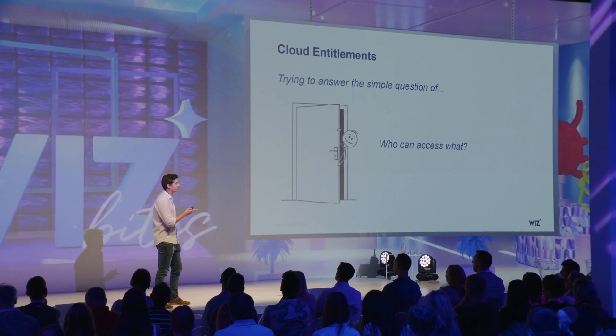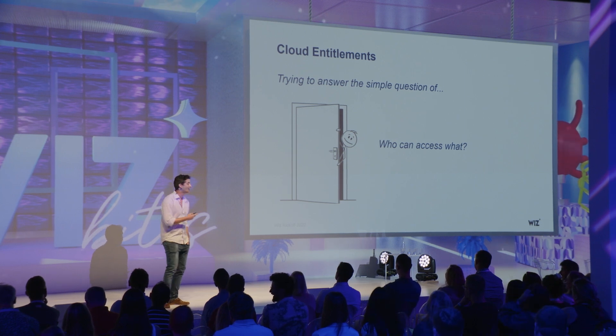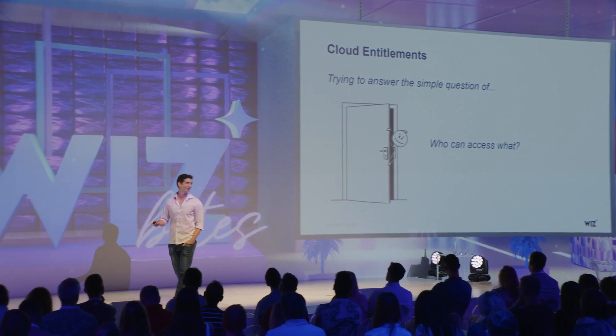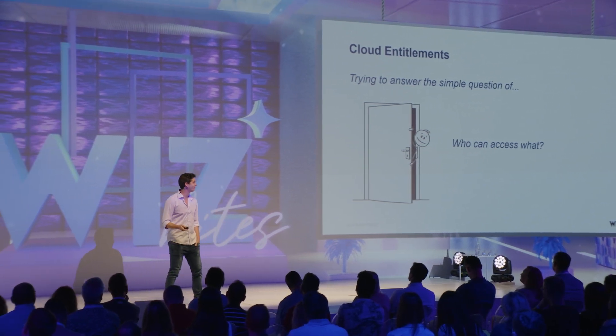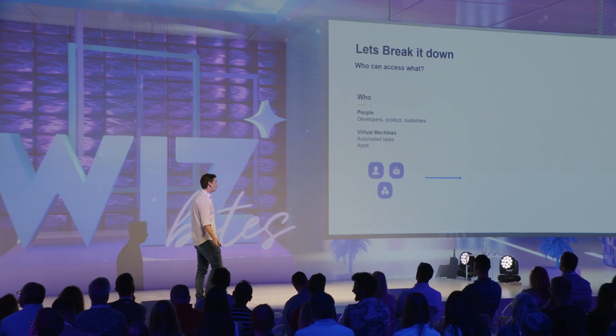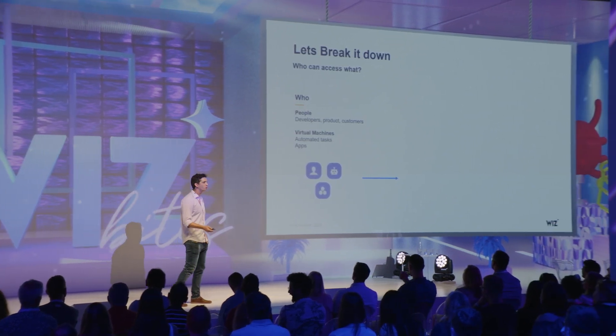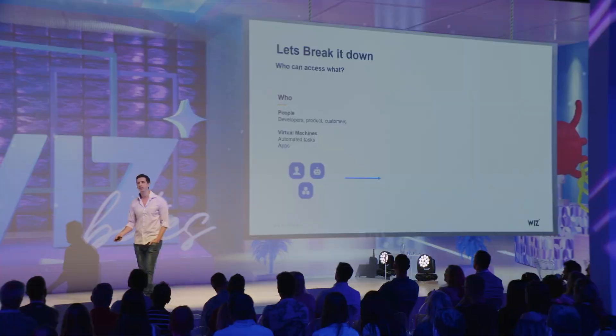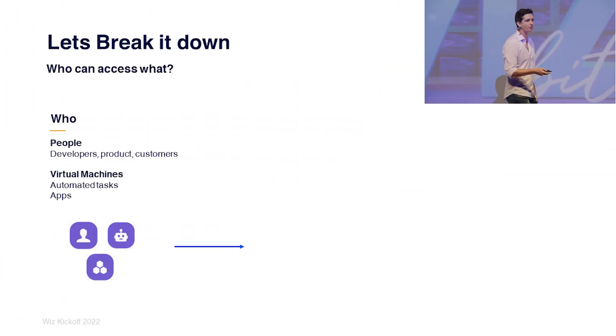Let's do 60 seconds very quick on what cloud entitlements are. In a very basic slide I stole from Matika, the question is, who can access what? So let's try and break it down. The first part is who. Usually, it used to be people. I would have to ask Tomer for permissions. He would then give it to me, and I use them.